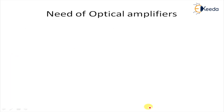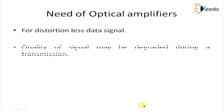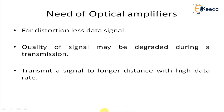Next, the need for optical amplifiers. First, for distortion-less data signal transmission. Second, the quality of a signal may be degraded during transmission, so the signal level at the receiver side may be insufficient. You can upgrade it to the required level using an optical amplifier. Third, to transmit a signal over longer distances at high data rates, amplification is necessary.